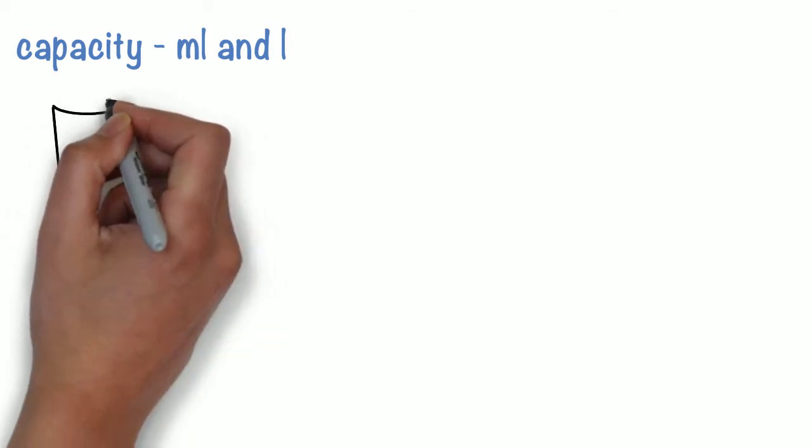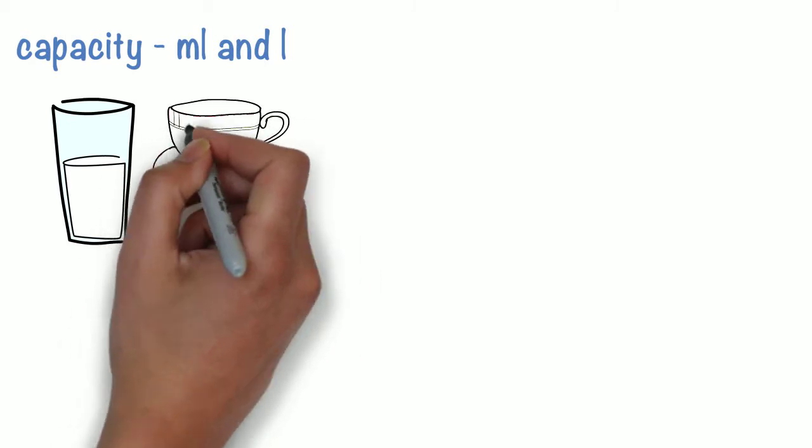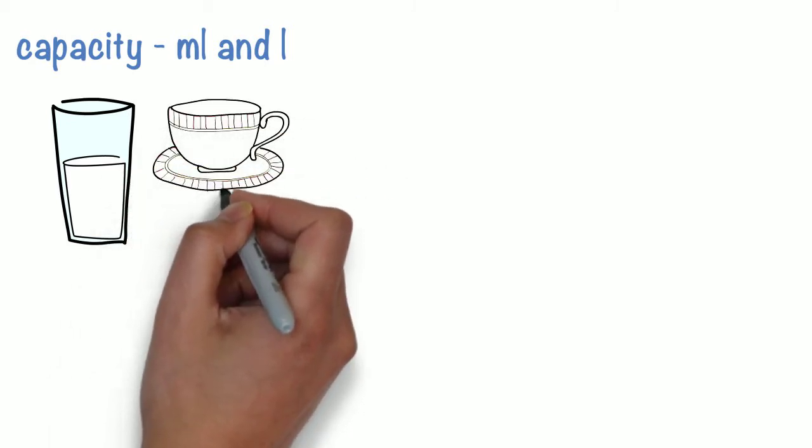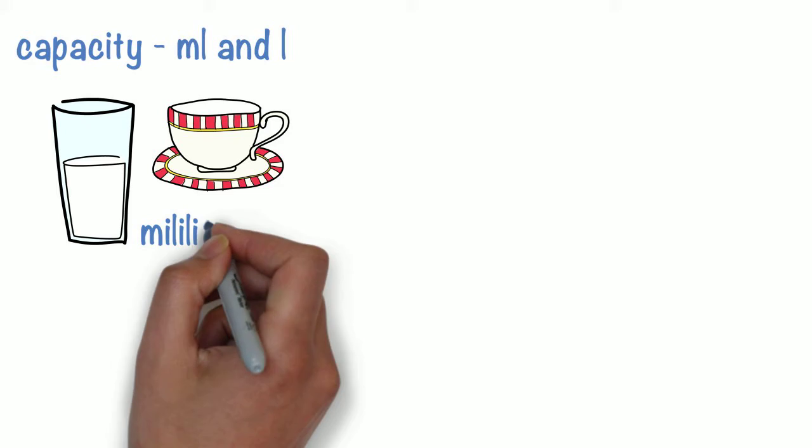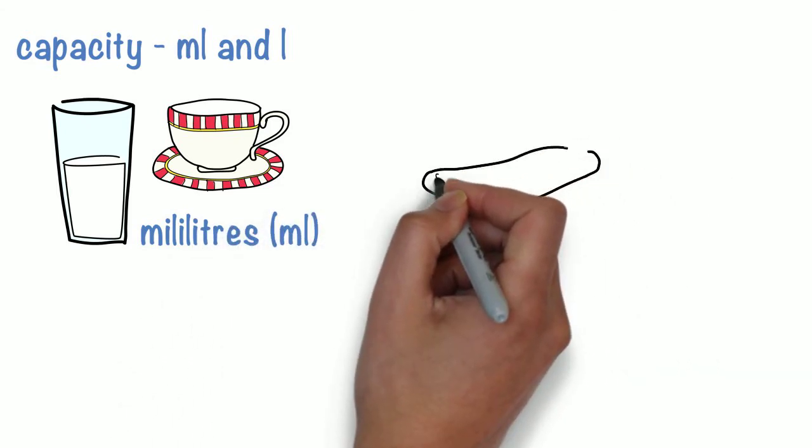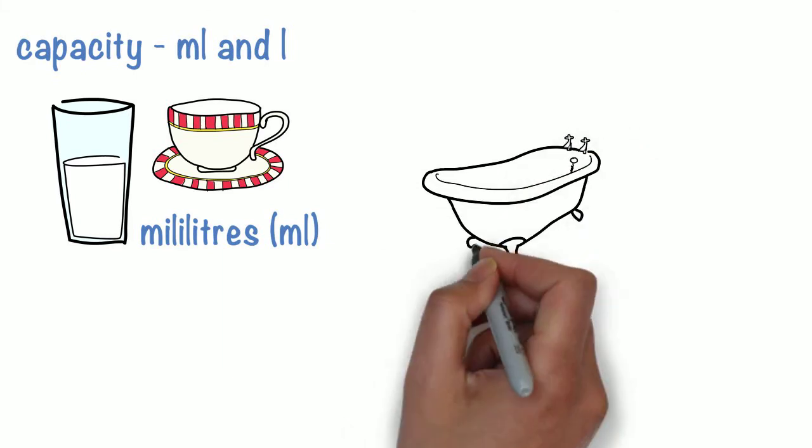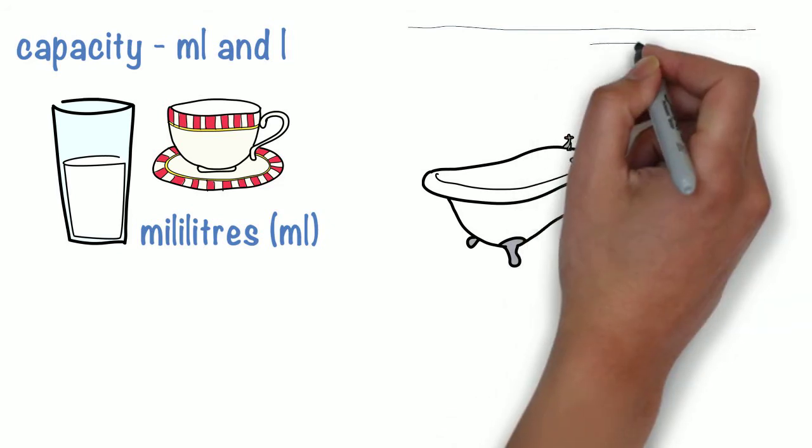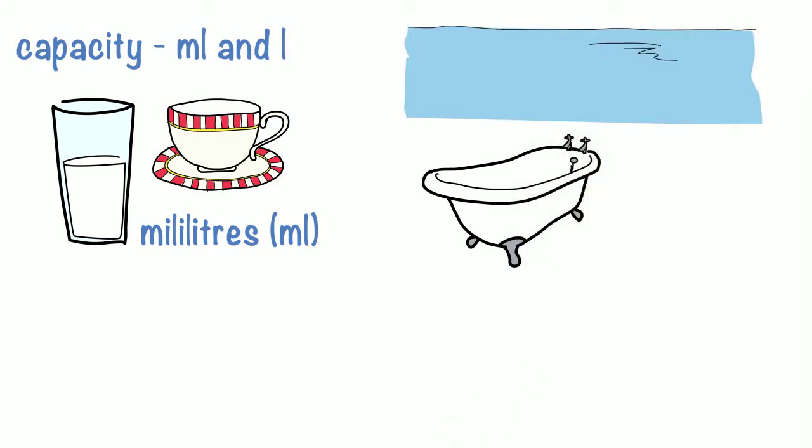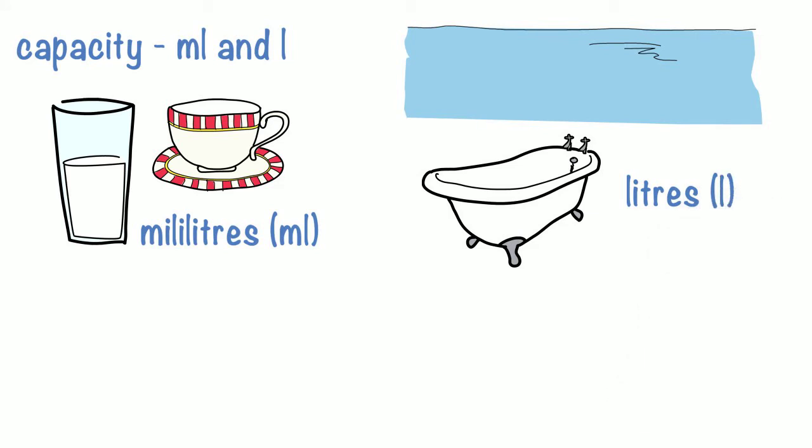Capacity is measured with millilitres and litres. Millilitres are the small amounts, like a glass of water or a cup. Litres are used for larger areas, such as a bath, a swimming pool. To measure these different things, we'd need a measuring jug.